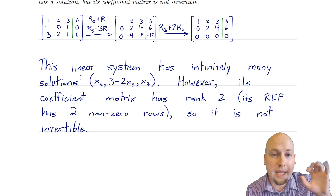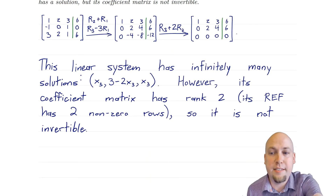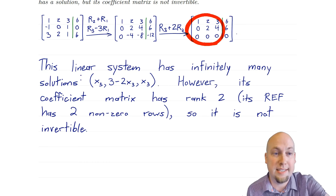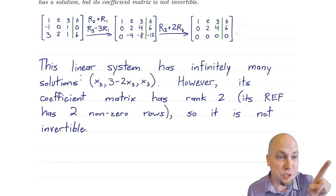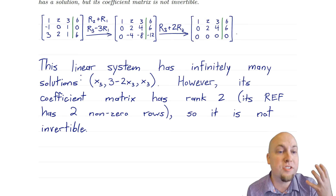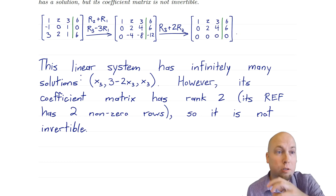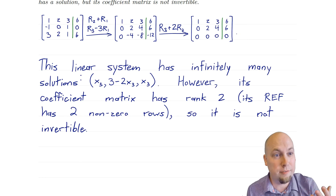Any vector of this form — no matter what x3 is — is a solution of that linear system. However, that coefficient matrix is not invertible. Looking at the row echelon form of the coefficient matrix, it only has two non-zero rows, so its rank is 2. That original coefficient matrix also has rank 2, so it's not invertible — it would have to have rank 3 to be invertible, since it's a 3 by 3 matrix.